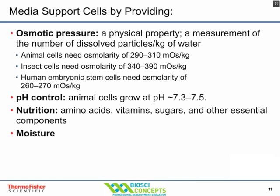Cell culture media also provides osmotic pressure, which is an important physical property. If osmotic pressure is too low, the cells will explode. If it's too high, the cells will be crushed. Generally, we grow cells at about 300 milliosmoles per kilogram.